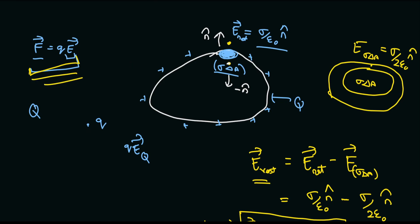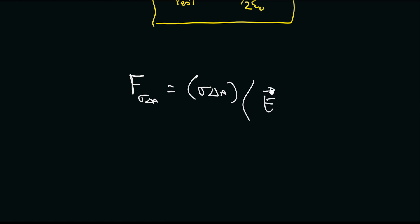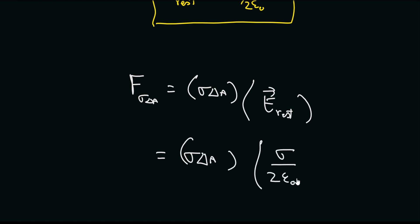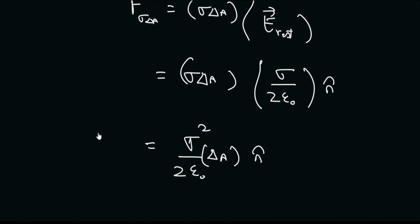We can now use the force formula. The force on our patch, sigma ΔA, equals the charge of our patch — sigma ΔA — times the electric field due to the rest of the charges, which is sigma divided by 2 epsilon naught n̂. So the force equals sigma squared divided by 2 epsilon naught, times the area ΔA, in the n̂ direction. This is the force on our patch due to the rest of the charges.